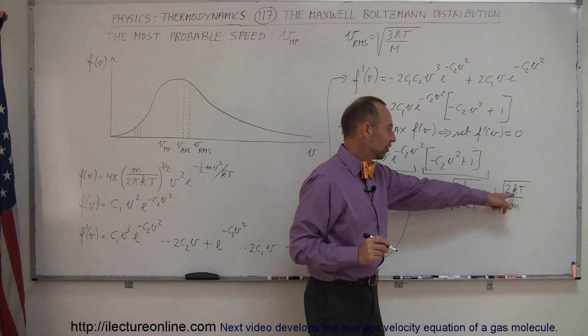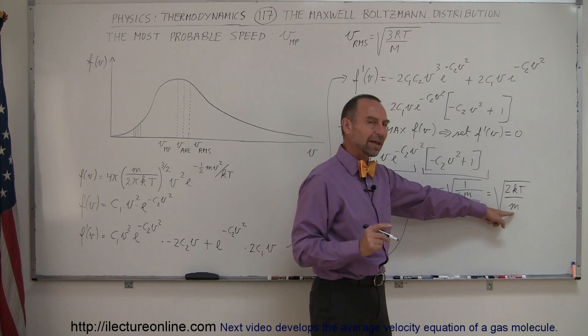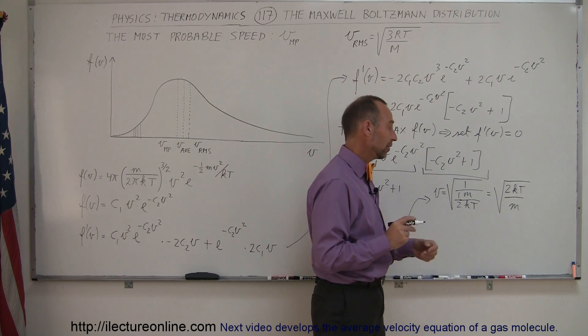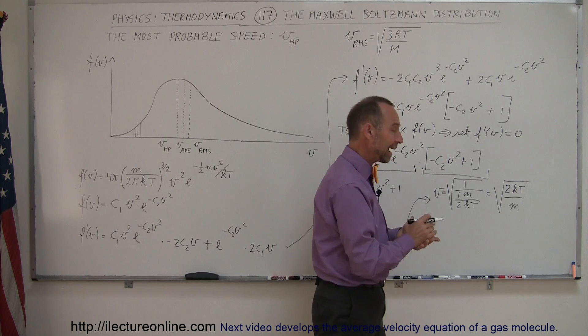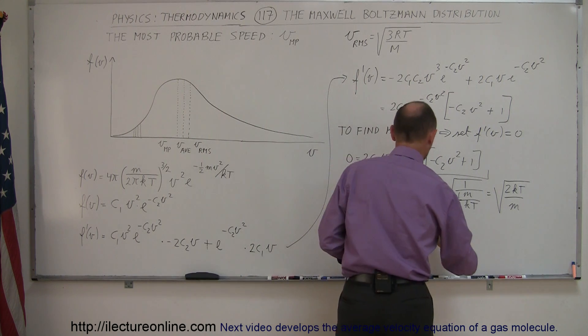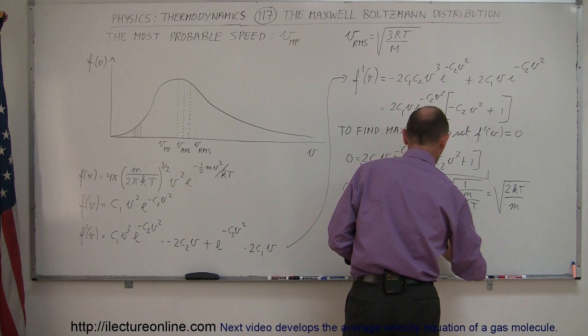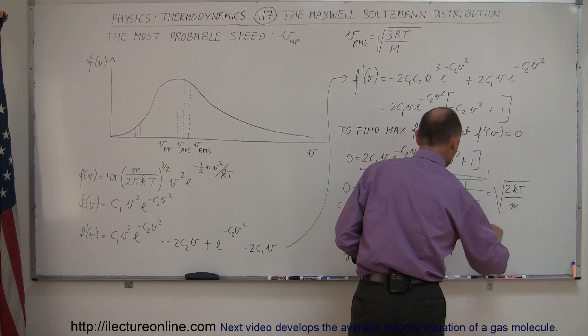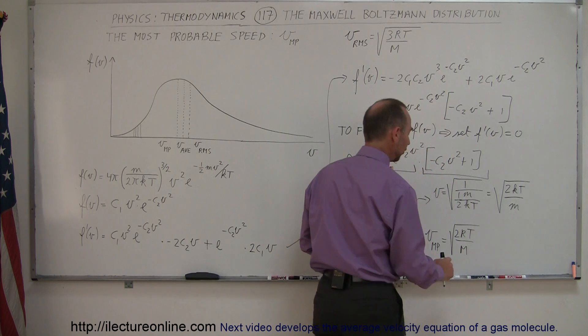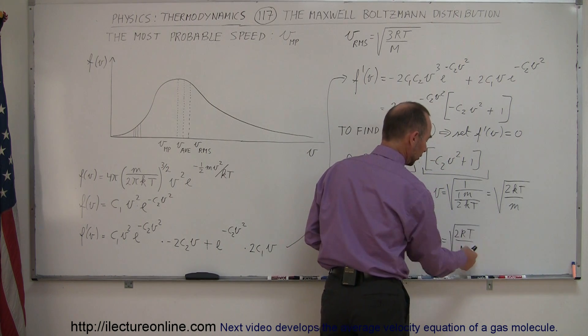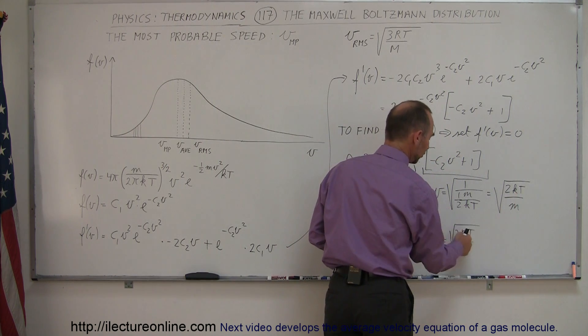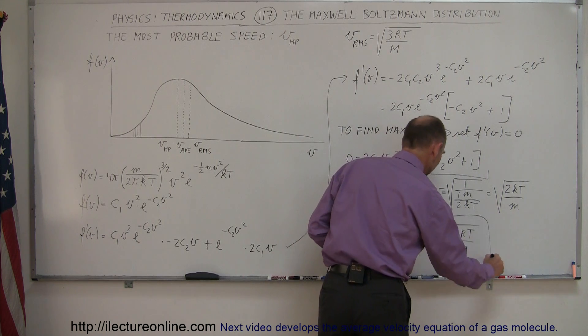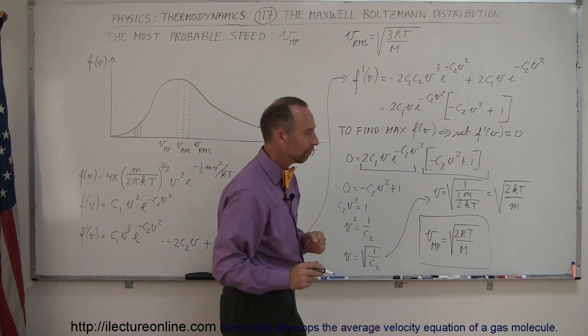And then of course, this is r divided by Avogadro's number. And this is the mass of a single molecule. So if I want to then multiply the top and the bottom by Avogadro's number, I can then say that v most probable is equal to the square root of 2rt divided by the molar mass. So instead of using the molecular mass, I use the molar mass. Instead of k, I use r. And here's the equation of the most probable velocity.